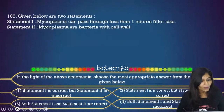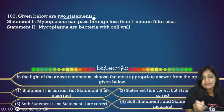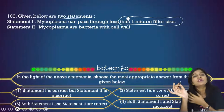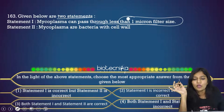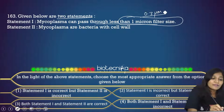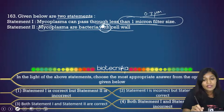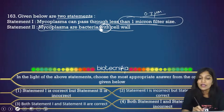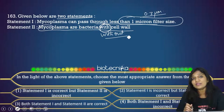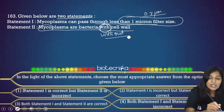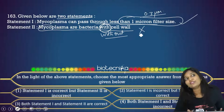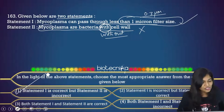Question 163: Statement 1 — 'Mycoplasma can pass through less than one micron filter size' — correct, they are extremely small (about 0.3 micrometers), the smallest known cells. Statement 2 — 'Mycoplasma are bacteria with cell wall' — INCORRECT. Mycoplasma are bacteria WITHOUT a cell wall. Statement 1 is correct, statement 2 is wrong. The correct answer is option 1.